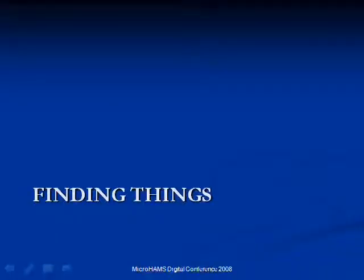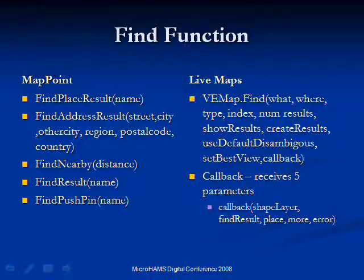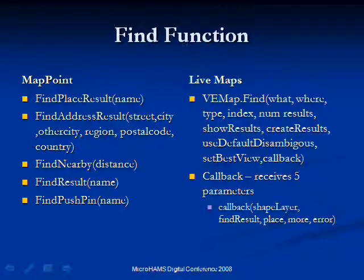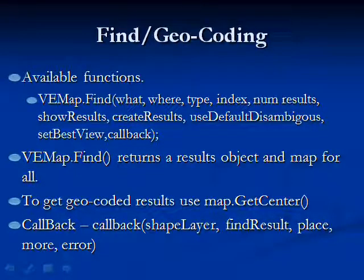For finding, they have a generic function called FindResult that can find an address or a place, and you can also find a push pin as a special case. For Live Maps, it's a What/Where type call. The biggest thing is Live Maps uses a callback concept — the callback executes after you've resolved the address, and they pass in five parameters you have to deal with. Where MapPoint is synchronous — you make the call and it won't return until it's done — Live Maps makes the call and you come back, then have to wait for the callback to execute before you get the results.